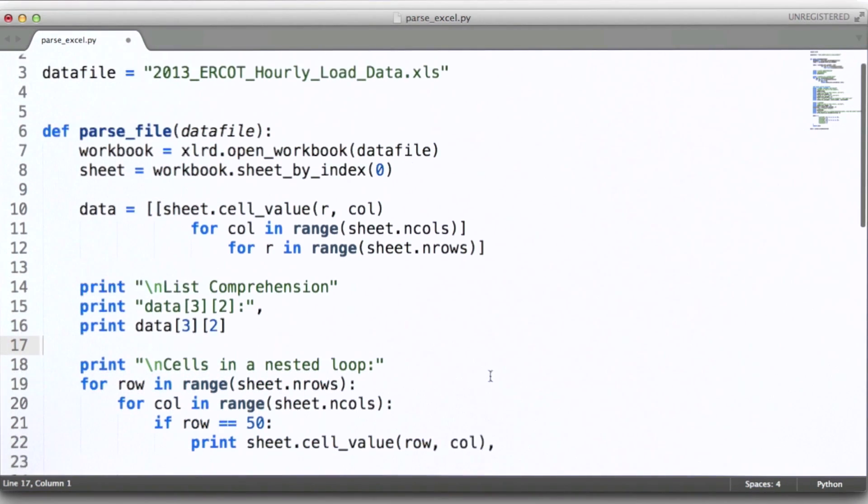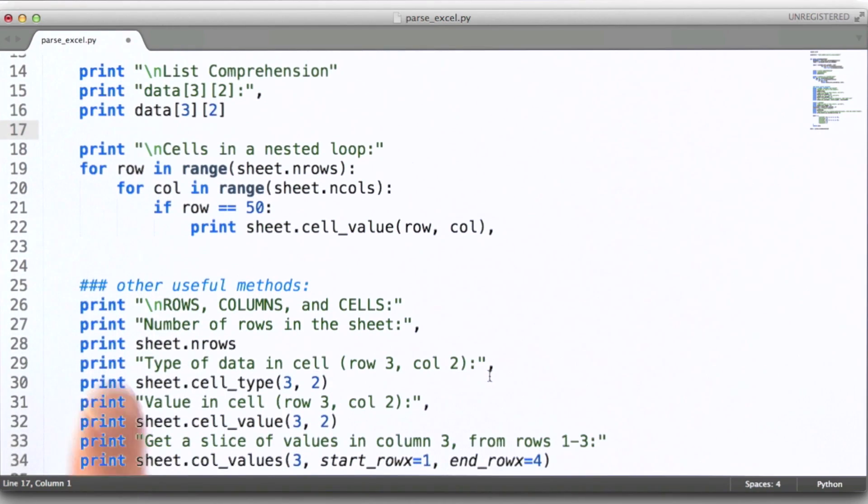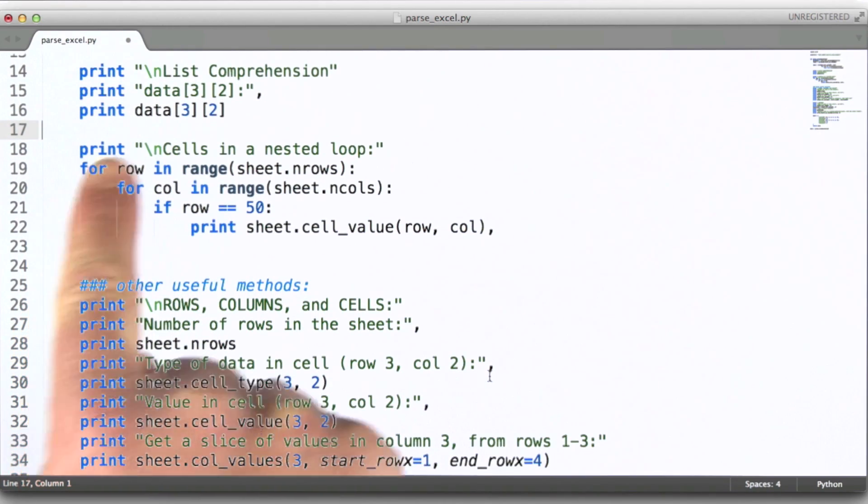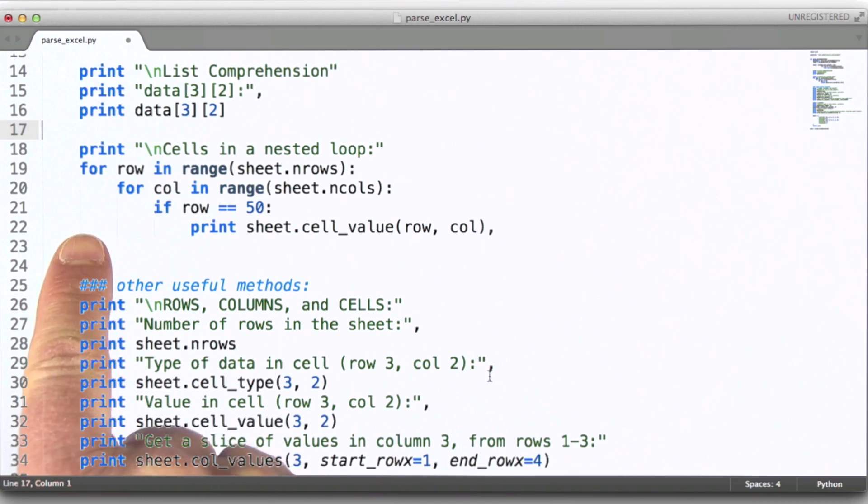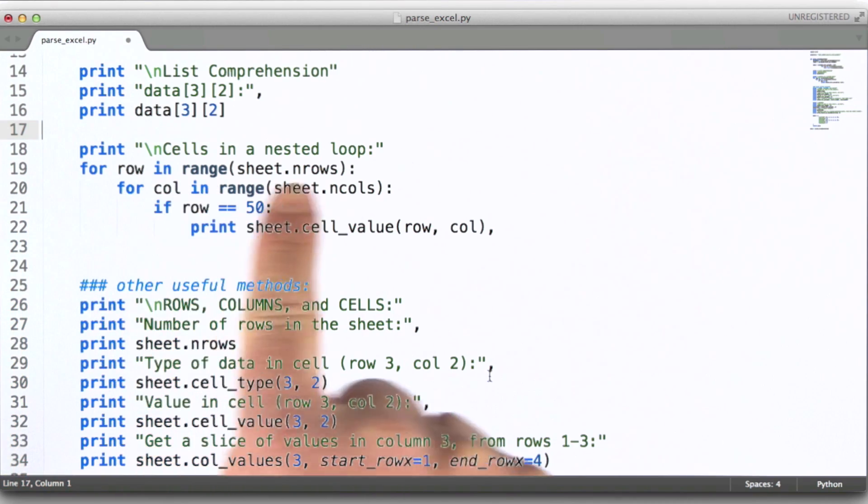Now if I scroll down a little bit, we can see that following the list comprehension piece, what we're doing here is looping through the entire sheet one row at a time, and then moving across the columns.